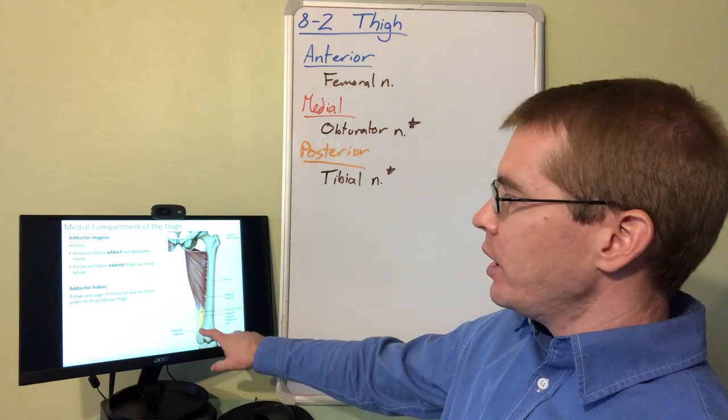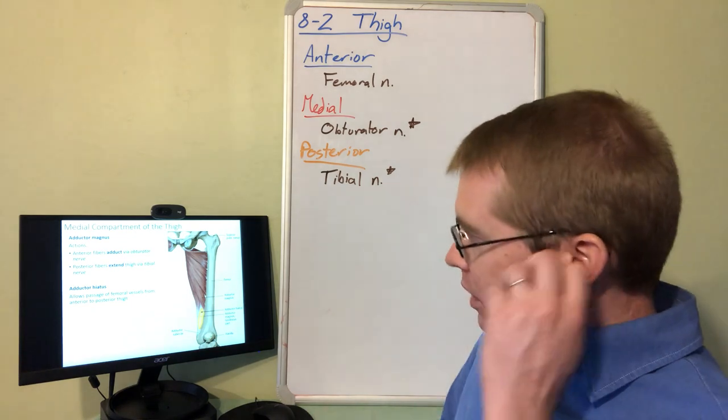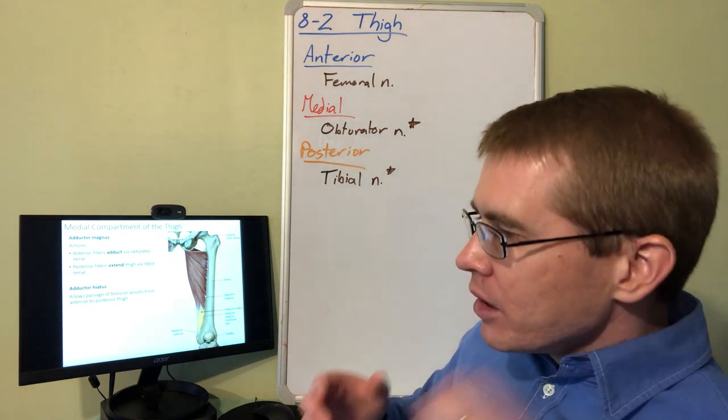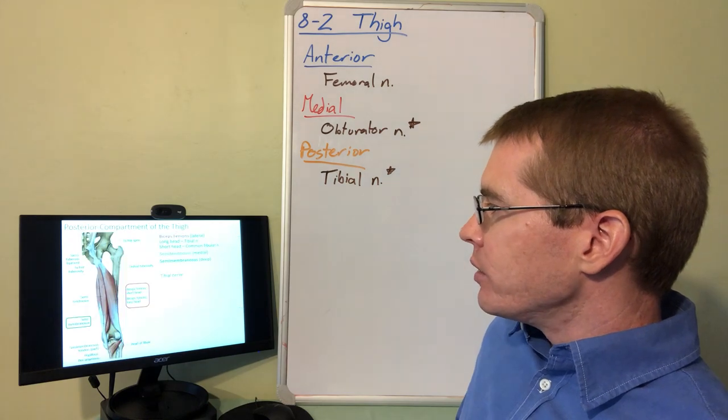You can also see a passageway here, an imperfection in this tendon of adductor magnus called the adductor hiatus. We'll see that the femoral artery and vein travel through that region.